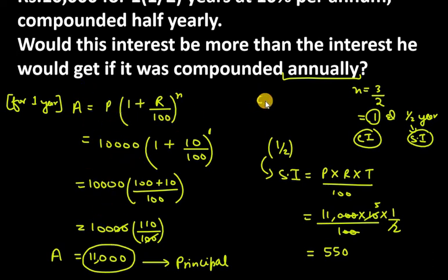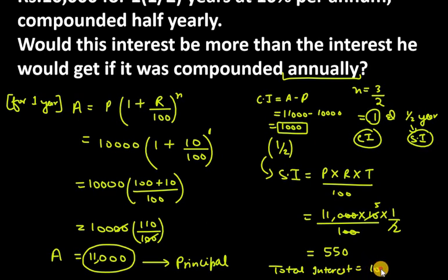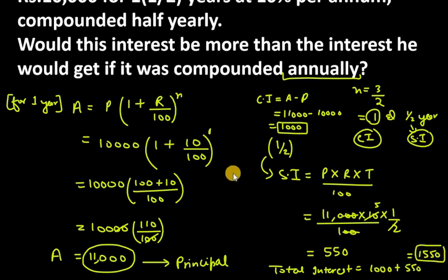Now let's find the compound interest for the first year: Amount minus Principal = 11,000 minus 10,000 = 1,000. Adding the 550 from the half year, the total interest when compounded annually is 1,000 + 550 = 1,550. So this is the answer for question number 8.